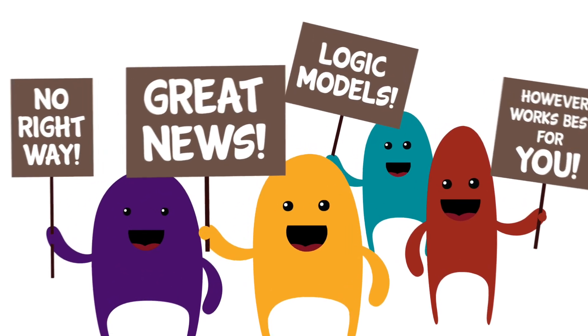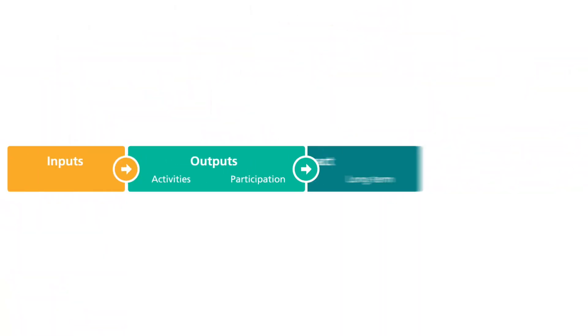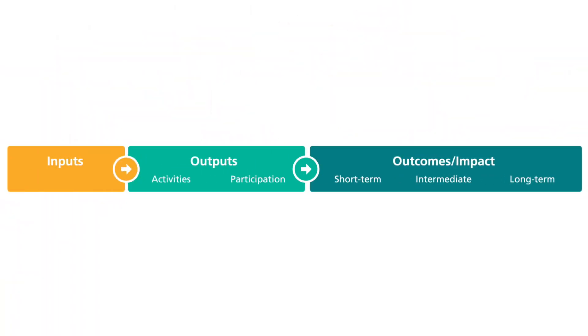The three most basic parts of a logic model are the inputs, the outputs, and the outcomes.